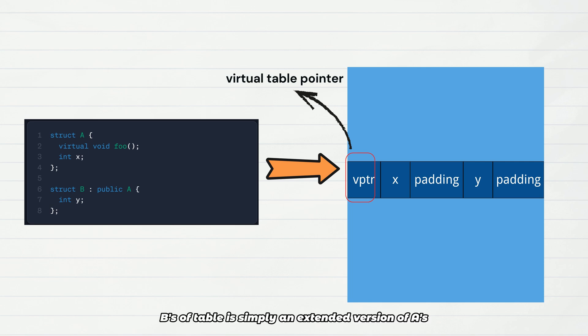Because B's vtable is simply an extended version of A's table. Of course, if B overrides the foo function, the vtable entry will be replaced with B's implementation. If B adds new virtual functions, their addresses are appended to the end of the vtable. This explains why the type conversion shown on the screen is zero-cost: since the A sub-object is located exactly at the start of the B object, the pointer p points directly to the object's beginning with no need for any address adjustment.